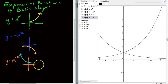Now, finally, we'll go on to our fourth basic shape. I'll just make a little bit of space here. Now, our fourth basic shape is all negatives, negatives everywhere. So we're going to have y equals negative e to the negative x. And we can take a look at what that looks like.